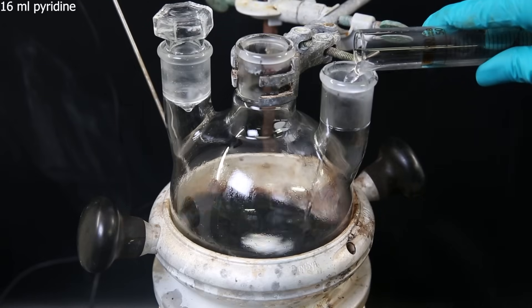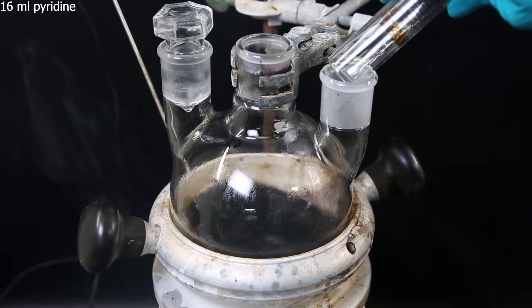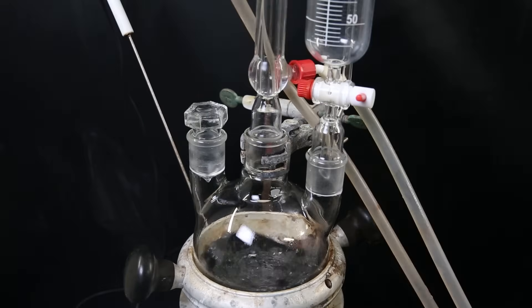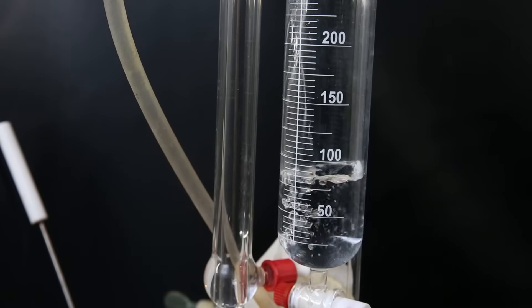After I added all of the alloy, I add 16ml of pyridine, which will serve as a catalyst. I then attach a condenser and a dropping funnel.